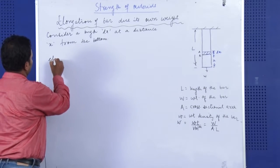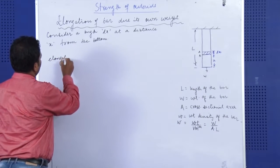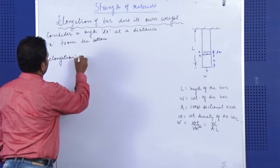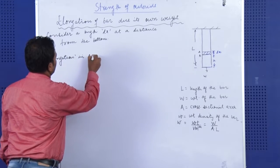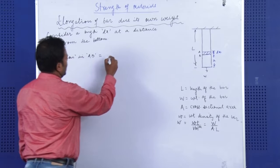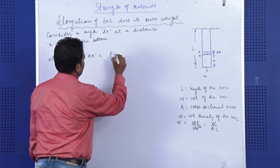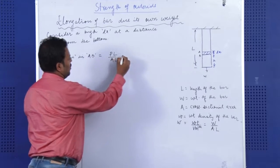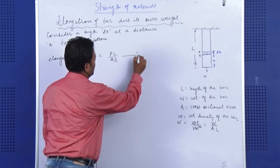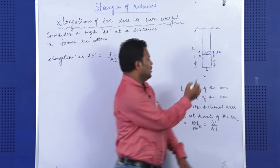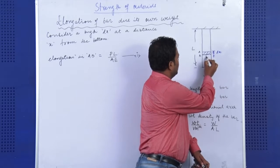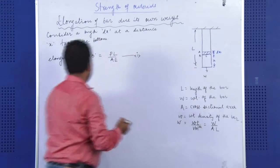So the formula is, if I write elongation in AB, it is given by PL by AE. Here L, A and E all are constant, but we need to find out P for this part AB, that how much of weight is acting over here.